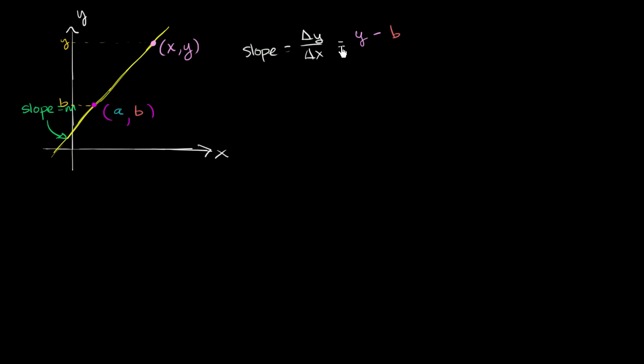And that's going to be over our change in x. And the exact same logic, we start at x equals a, we finish at x equals this arbitrary x, whatever x we happen to be at. So that change in x is going to be that ending point minus our starting point, minus a. And we know this is the slope between these two points. That's the slope between any two points on this line. And that's going to be equal to m. So this is going to be equal to m.